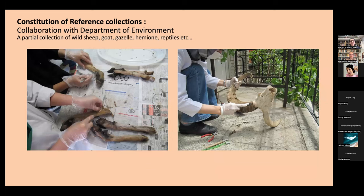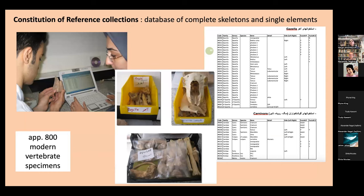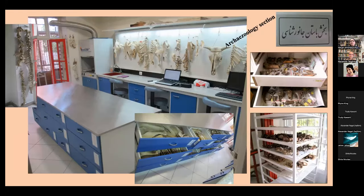Here you can see preparation of legs of wild goats, wild sheep, and gazelles, so we have at least these animals represented in our collections. We also built a very complete, documented database of these skeletons — each single bone described by side (right/left), completeness, etc. So far we have 800 modern vertebrate specimens in this lab, which is a very good number for beginning to work with archaeozoological material.